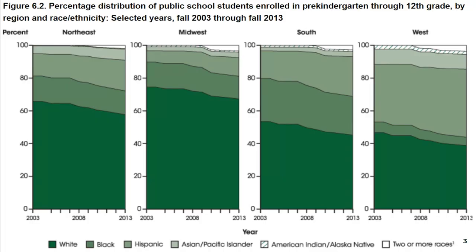First, let's look at an example of diversity using categories. You might remember this graph from the Achievement Gap lecture. It depicts the racial and ethnic distribution of public school students from 2003 through 2013, showing years on the x-axis and percent by enrollment on the y-axis. It also shows differences by geographic region. Beginning from the bottom, the darkest shade of green shows the percent of students categorized as white, moving up through black and other groups up to 100%.